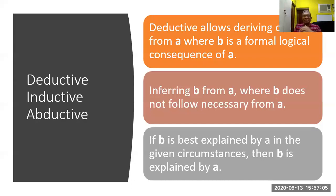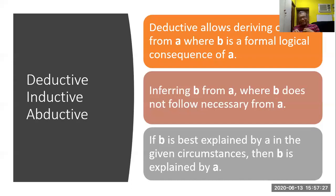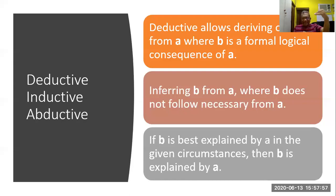The third one is abductive reasoning. While deductive and inductive reasoning are from Aristotle's period, abductive reasoning is a recent phenomenon from the 19th century, and more so in the case of big data analytics and the Bayesian approach. In abduction, we take two or three data sets, and B is best explained by A in the given circumstances — then we can say B is explained by A. Therefore, deductive, inductive, and abductive logic are all built into our entire research process.